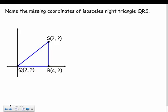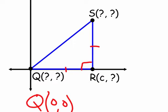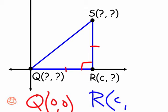Let's look at some base things to lead up to our coordinate proof. For example, I'm given a coordinate plane and it says I have an isosceles right triangle. So my right angle is here, which means these two sides are congruent — that's what makes it isosceles. Let's fill in the coordinates. Q is the origin, so it's at (0, 0). Looking at R, it's a distance of C in the X direction, and since it didn't move up or down, it has a Y of zero.